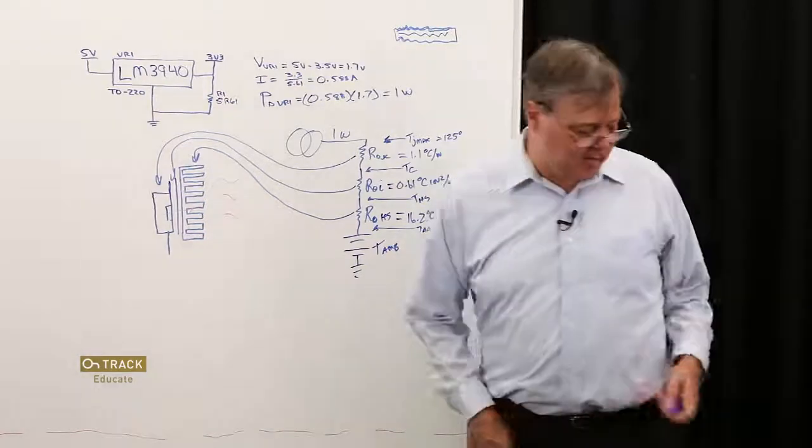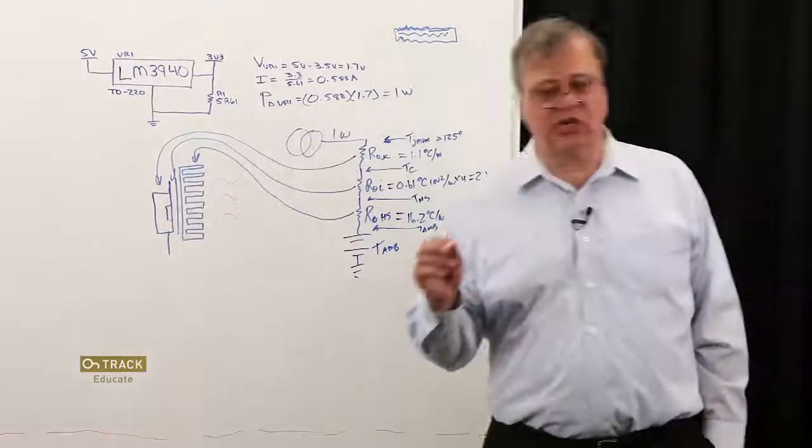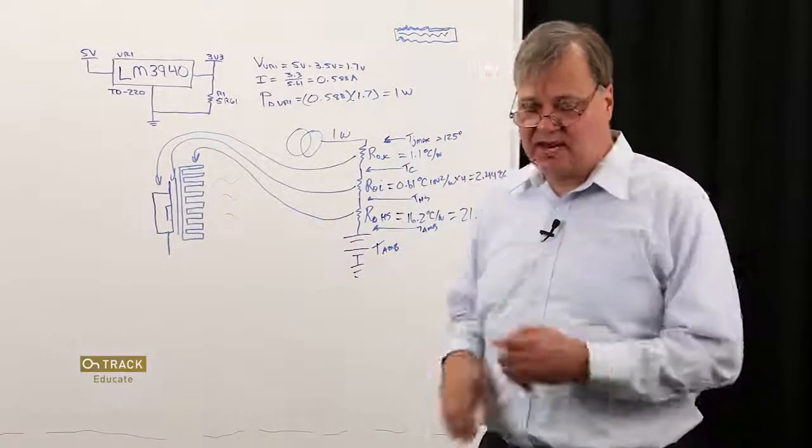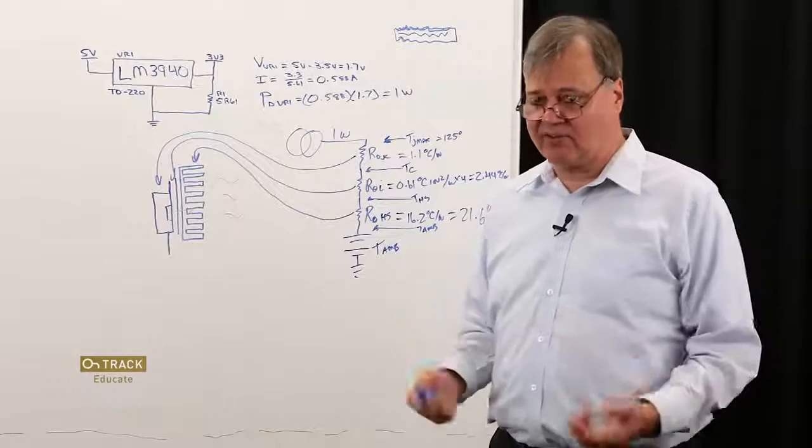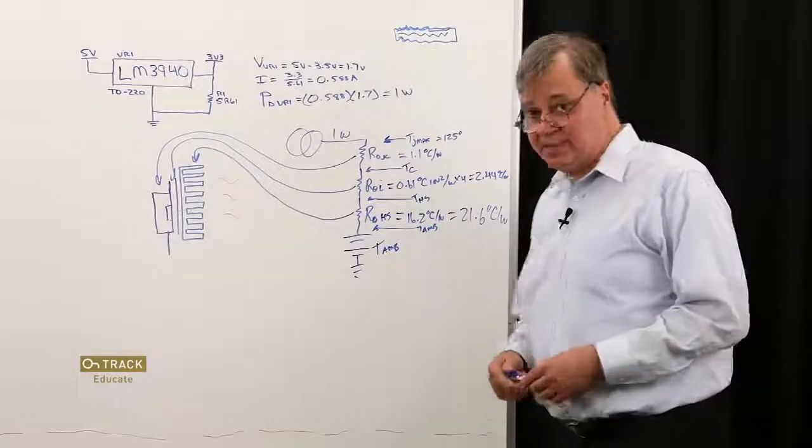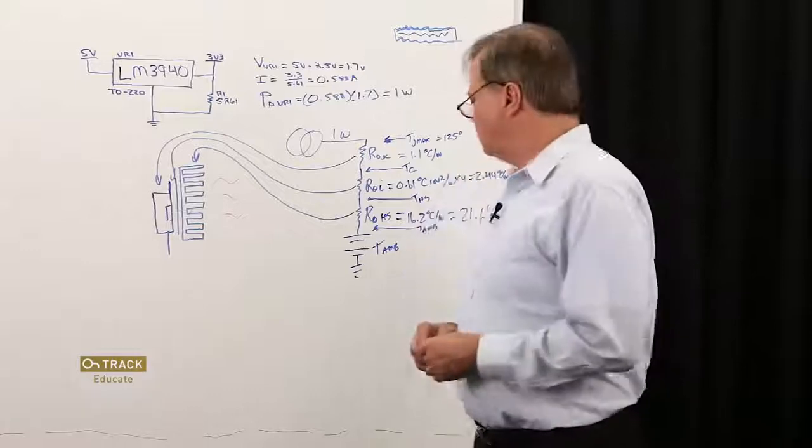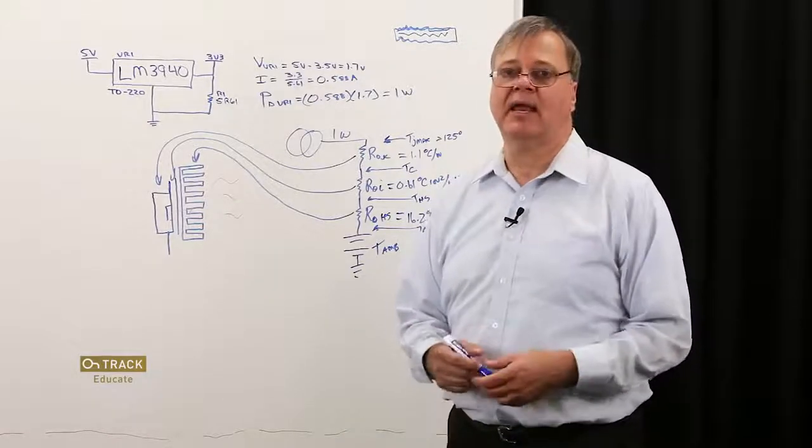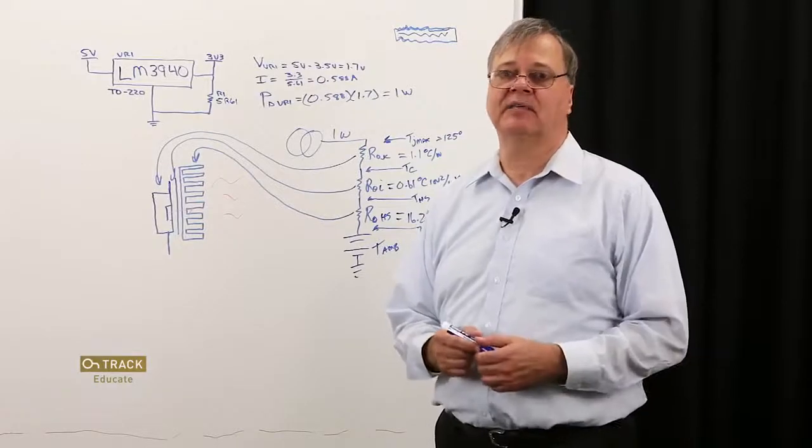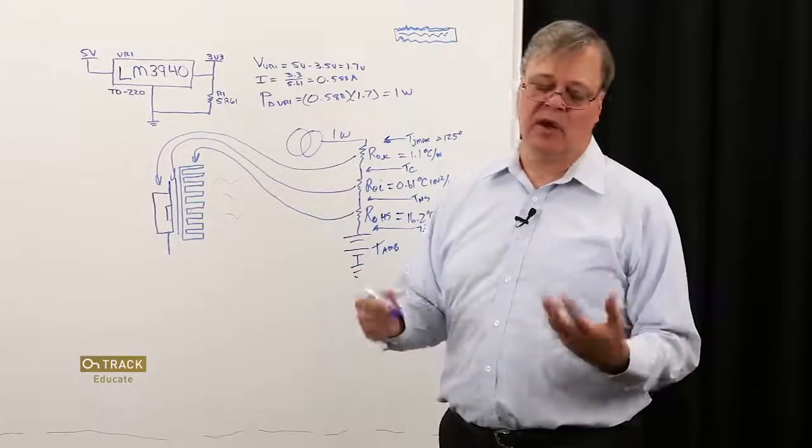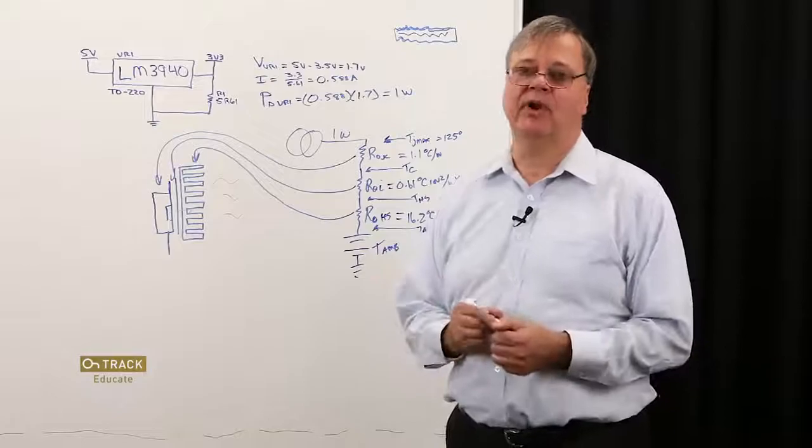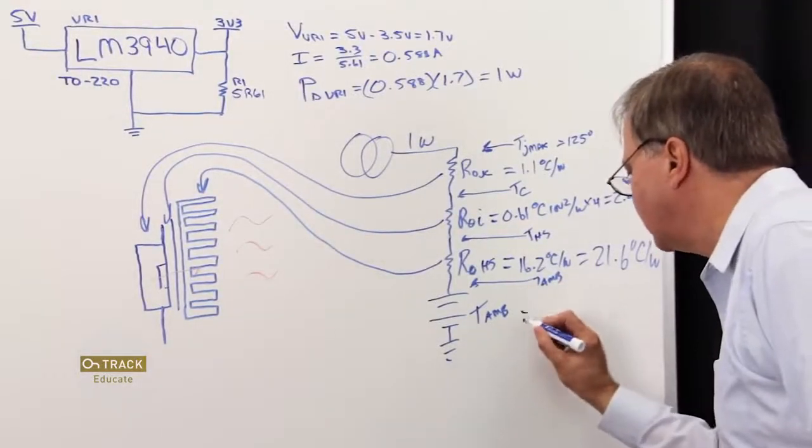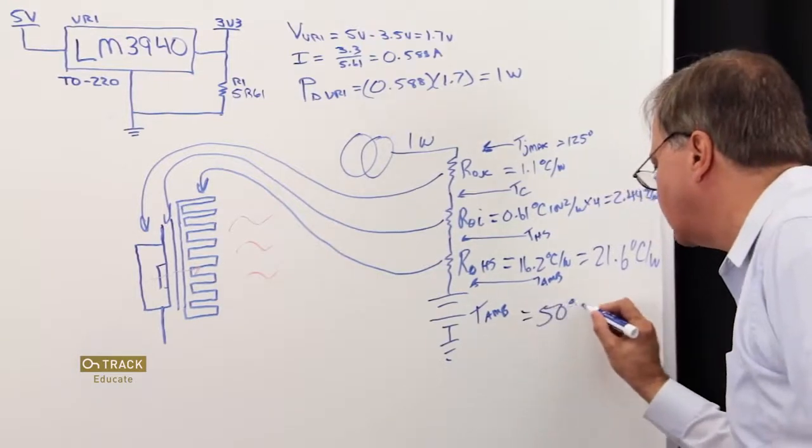We've got almost all the information we need to determine what our junction temperature is going to be in this application. The one piece of data that's missing is our operating environment. What is our ambient temperature? For this example, let's assume this is an industrial product and it must be rated to run properly in an operating temperature of 50 degrees C. So, T ambient equals 50 degrees C.